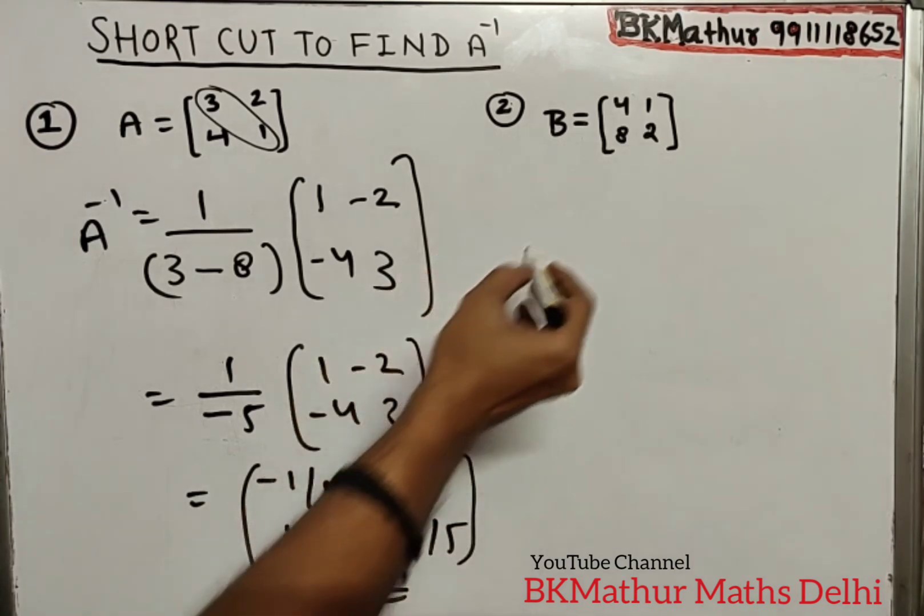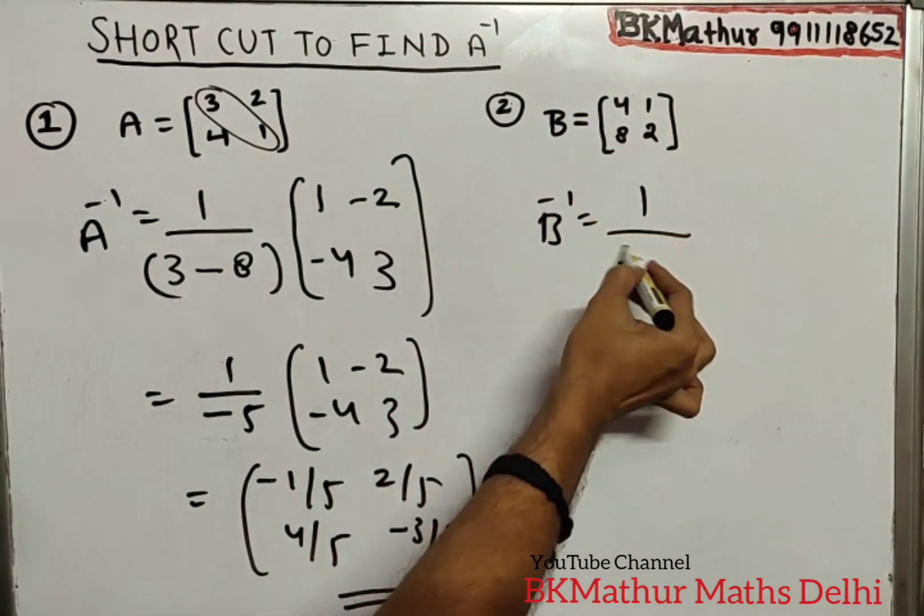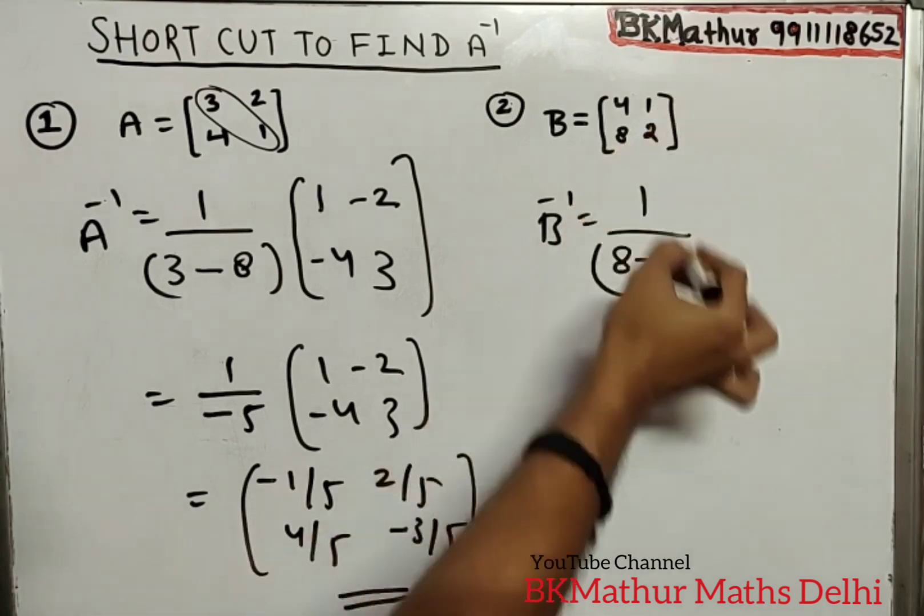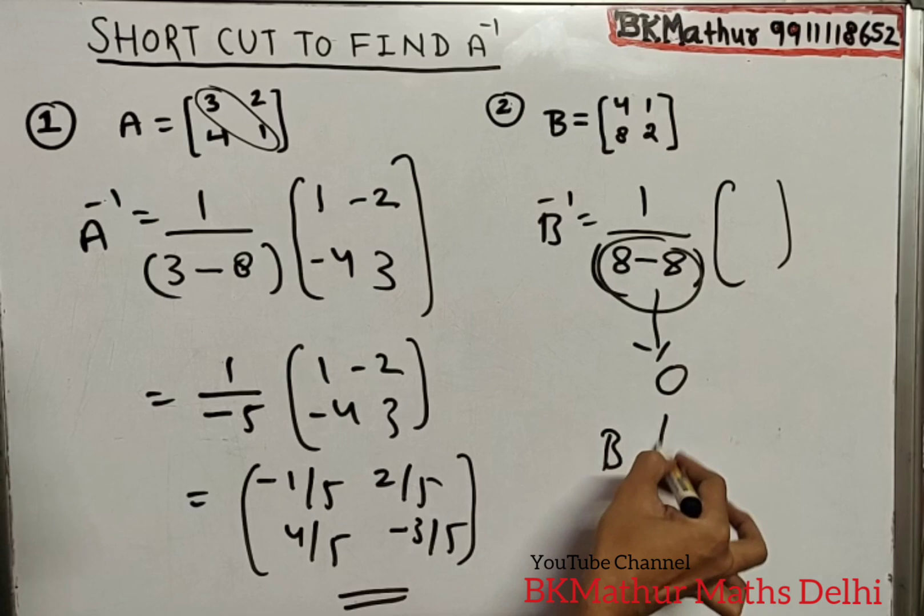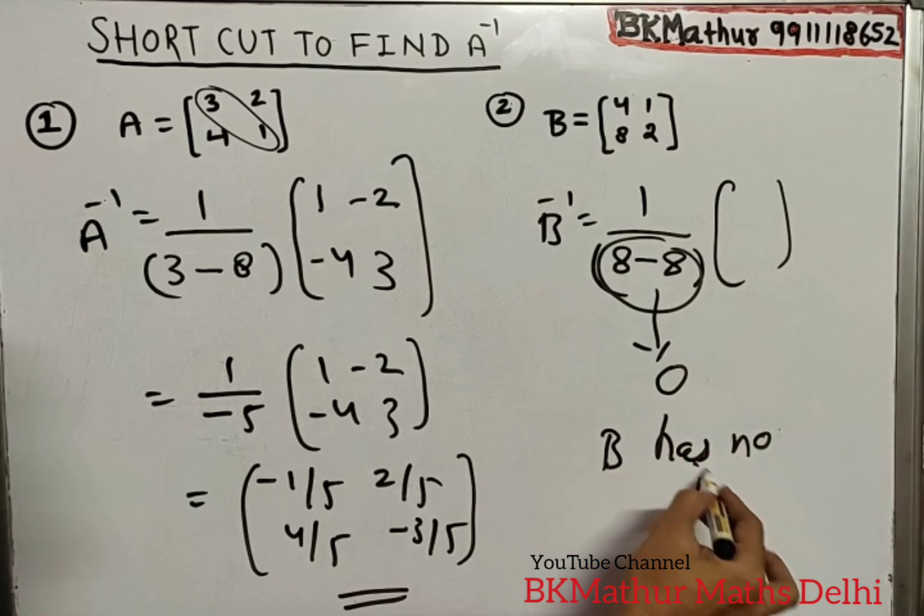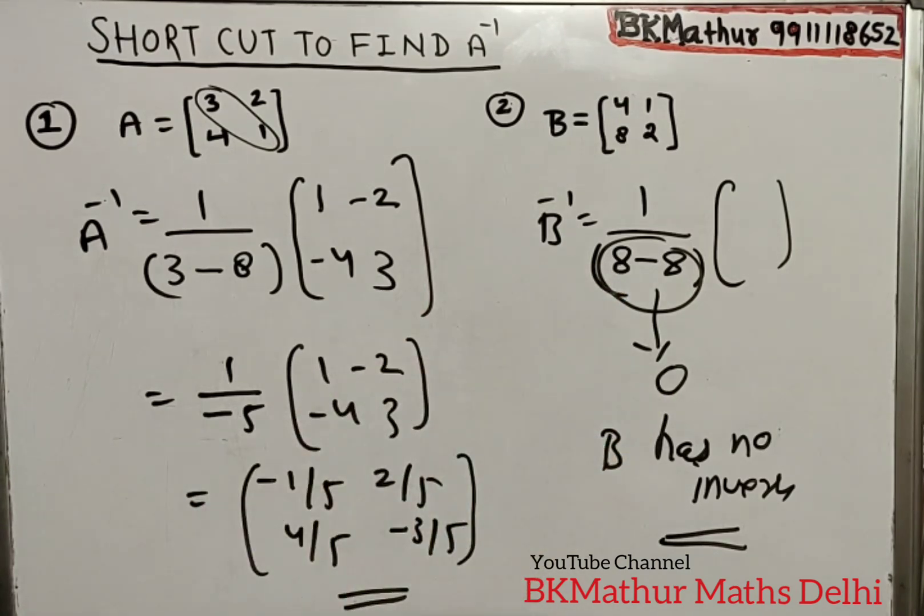Next one is B inverse. One upon determinant - this will be 8... but this becomes 0. If it's 0, that means B has no inverse. The inverse does not exist, so keep that in mind.